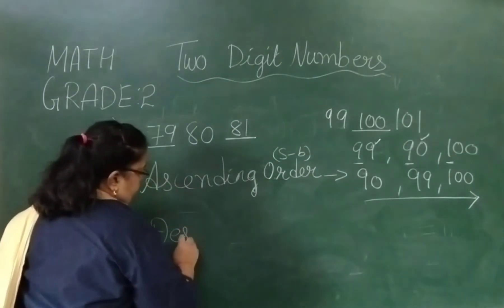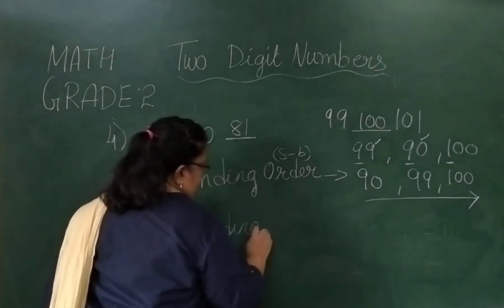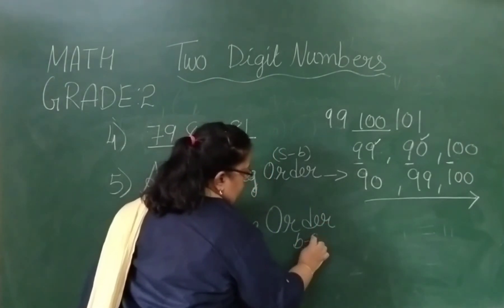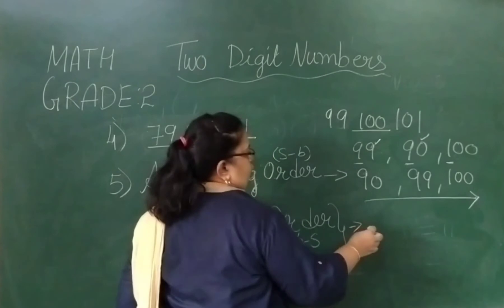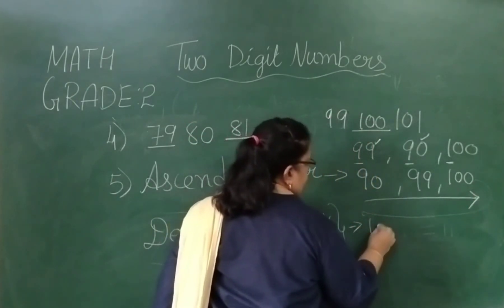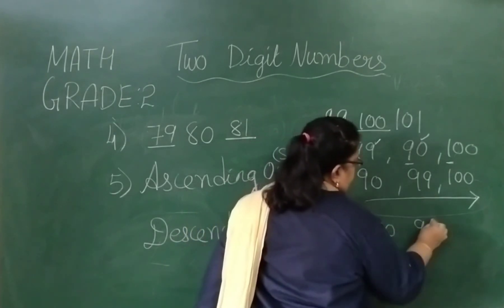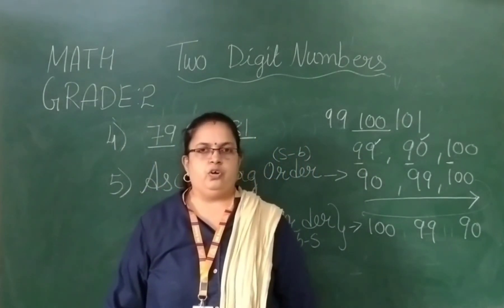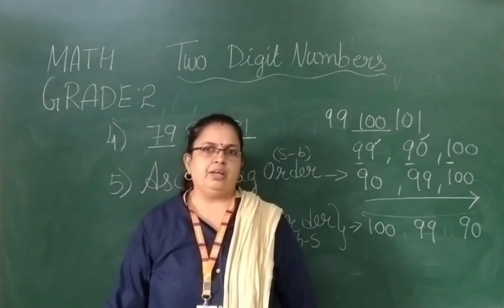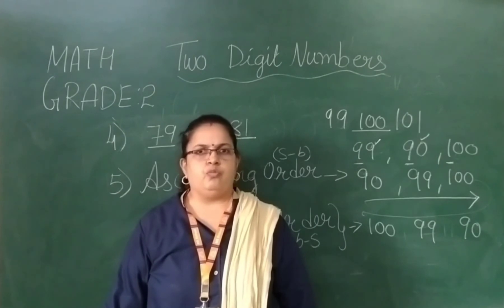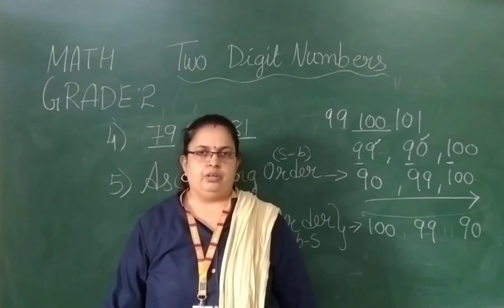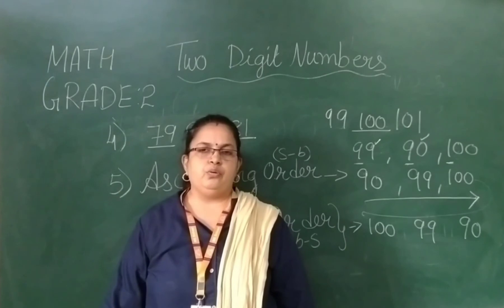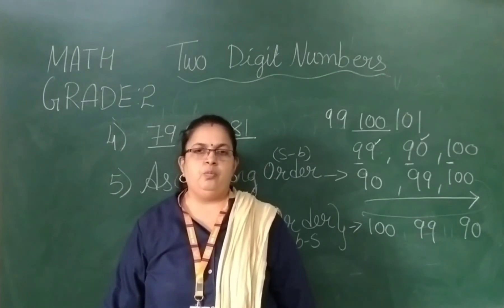This is the ascending order. Descending, it is big to small. So you have to write just reverse of it. How you write: first 100, then 99, and then it is 90. I hope you are clear with the chapter thoroughly, about all the exercises which I have explained to you in these videos from 1 to 5. Thanks for watching. We would interact with you soon in our Zoom online session and provide you homework in our online group. Stay home, stay safe.